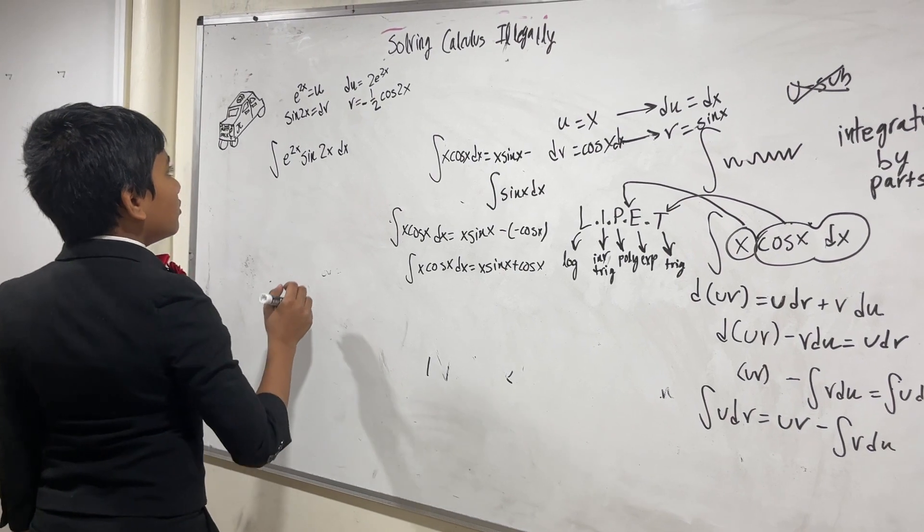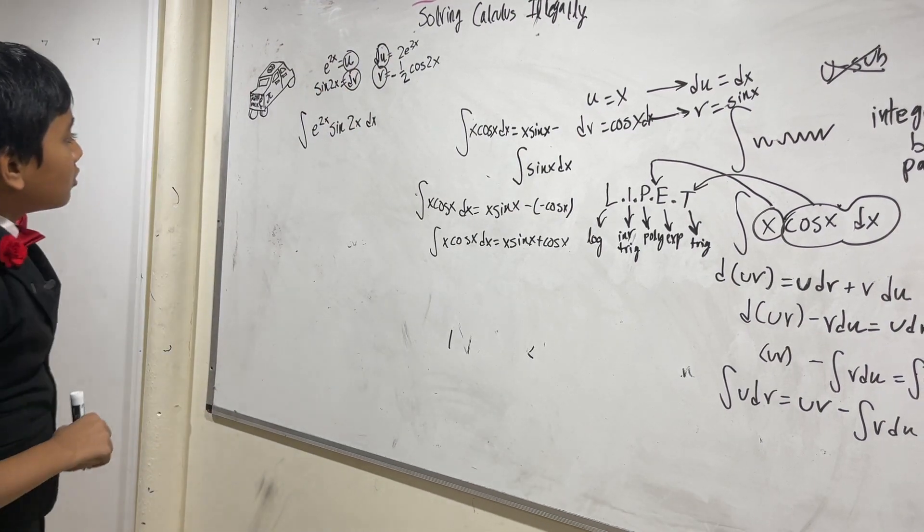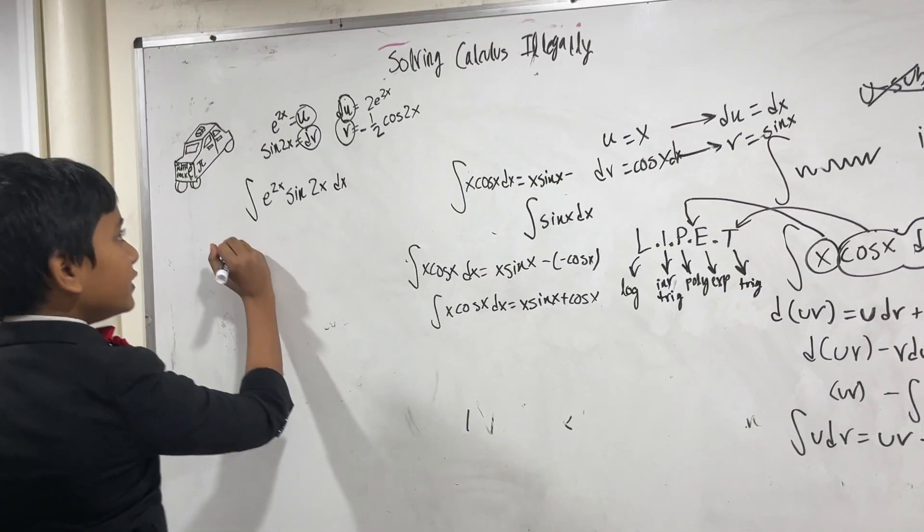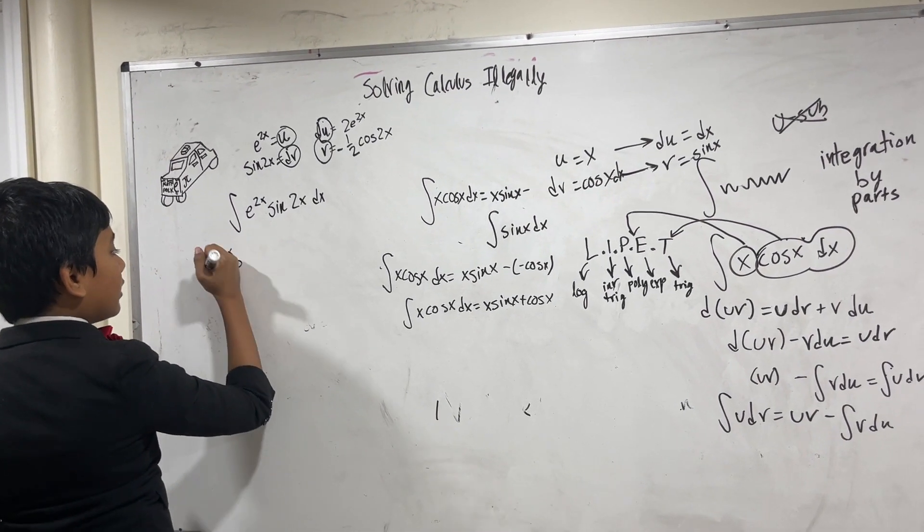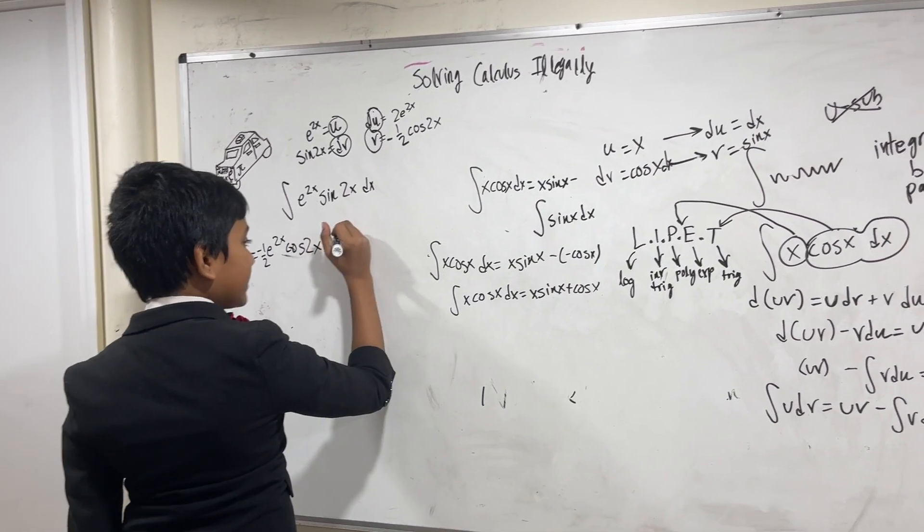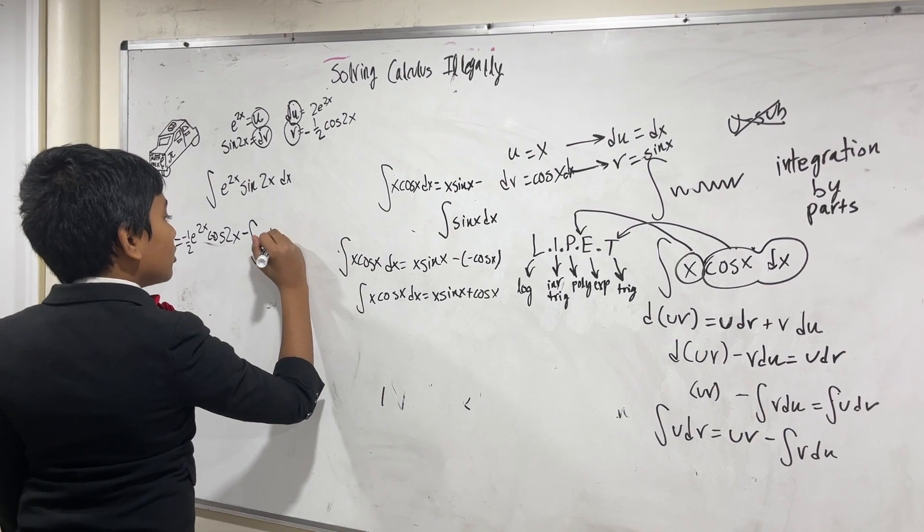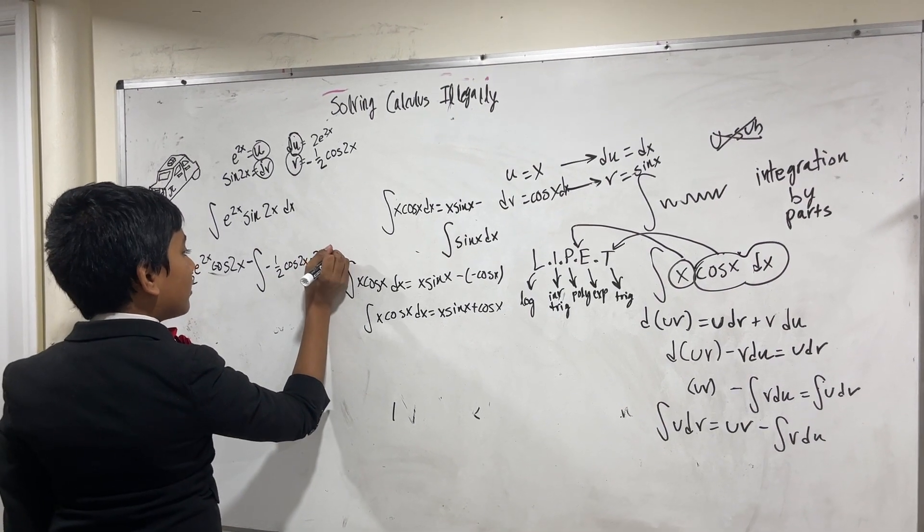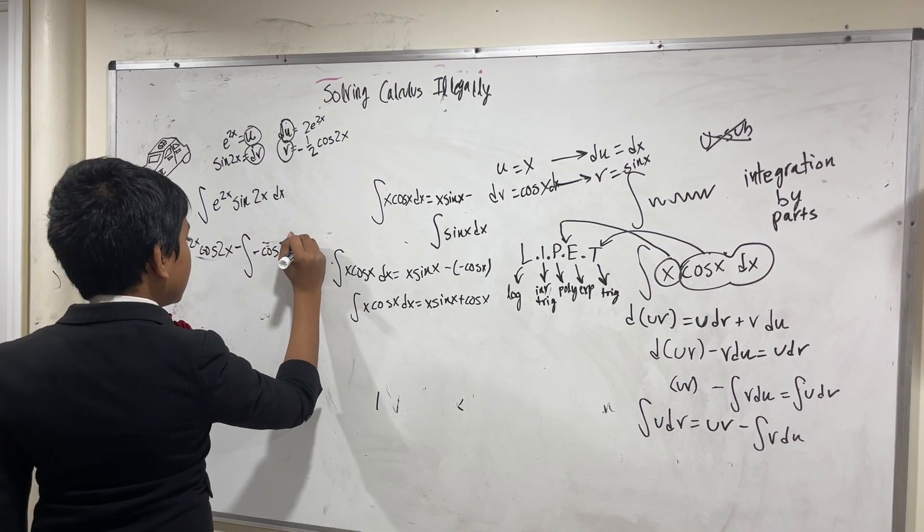Now we've got our u, our v, our du, and our dv. Let's substitute them into the formula. We know that this is going to be equal to u times v, so e^(2x) times minus 1 half cosine 2x, and that's subtracted from the integral of v du. So we have the integral of minus 1 half cosine 2x times 2 e^(2x). Now I'm going to simplify this a little bit, so this is now just minus cosine 2x e^(2x).